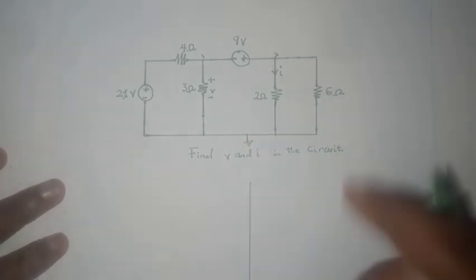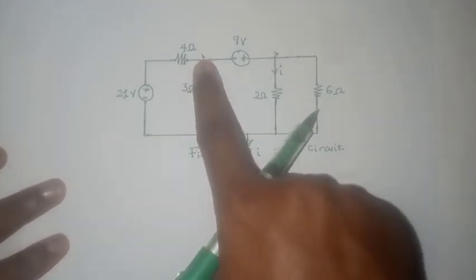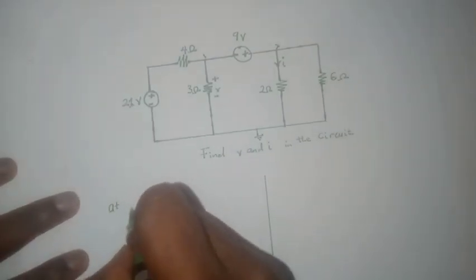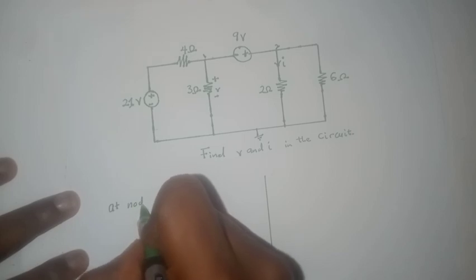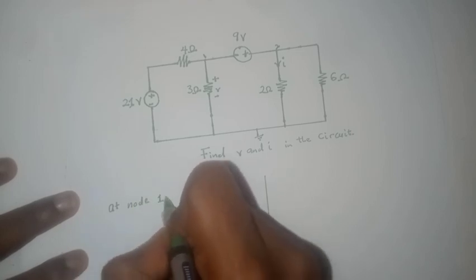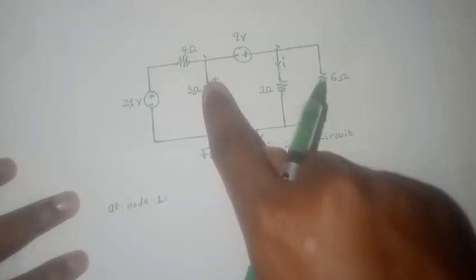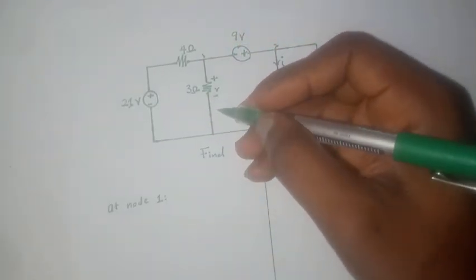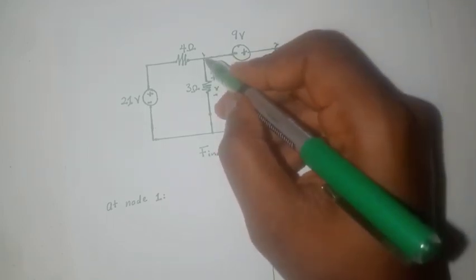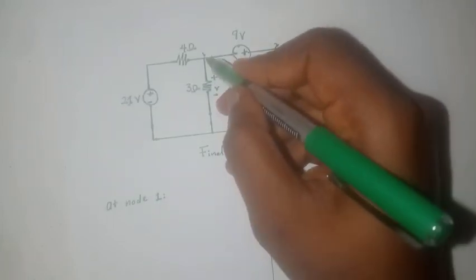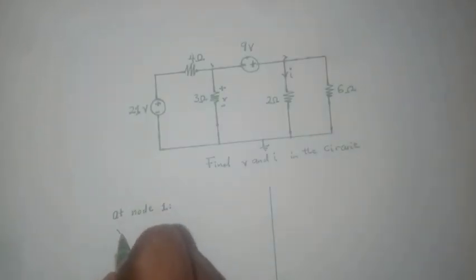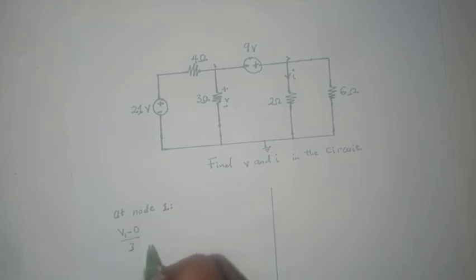By choosing this to be our reference node we mean that the node voltage at this node is zero. So we come to node one and write the KCL equation at node one. At node one we have this branch, so the current flowing into node one should be v1 minus zero divided by three.